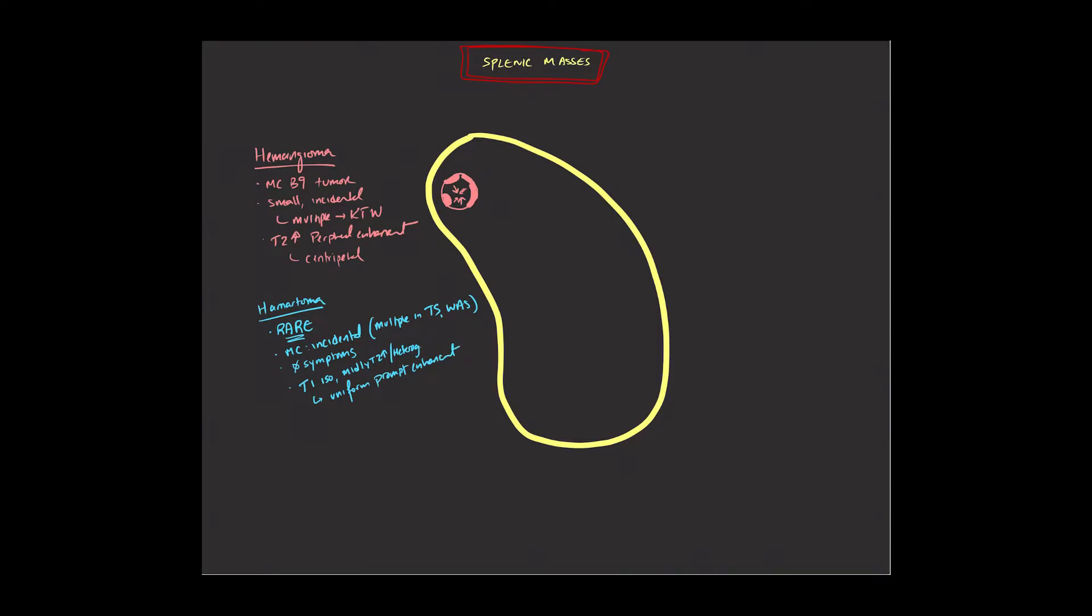And so that's one way you can differentiate that from hemangioma, which generally has more peripheral enhancement, peripheral nodular enhancement that fills in. While hamartomas, when you give contrast from the get-go, they're going to be enhancing pretty much homogeneously and the entirety of the lesion will enhance.